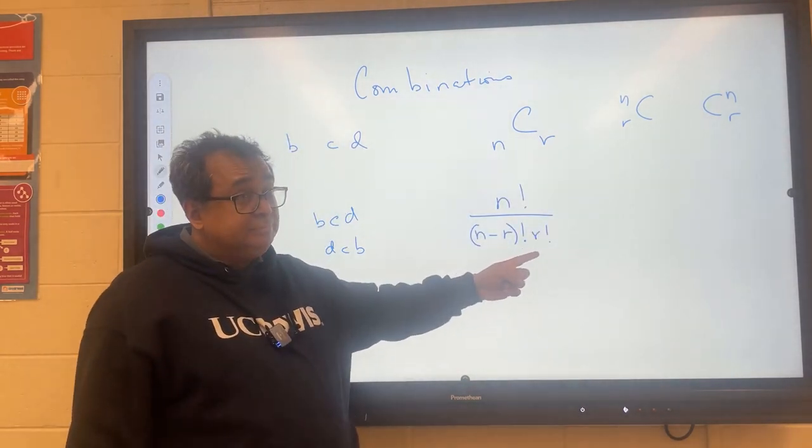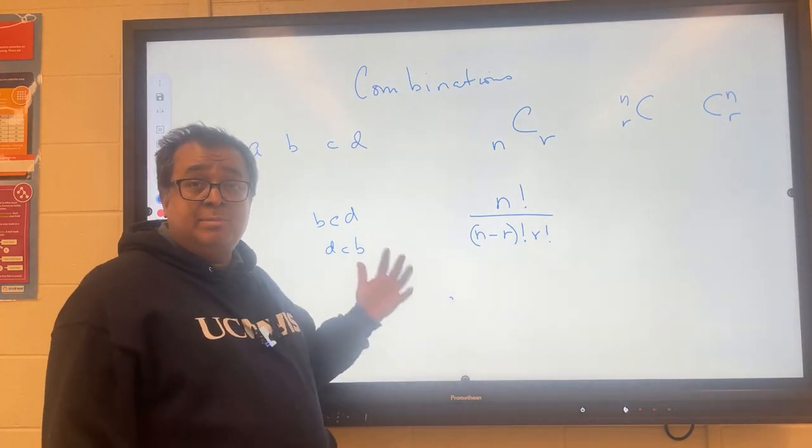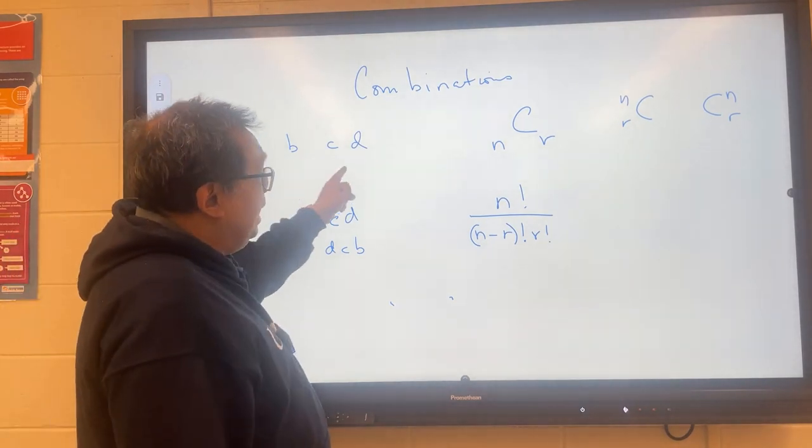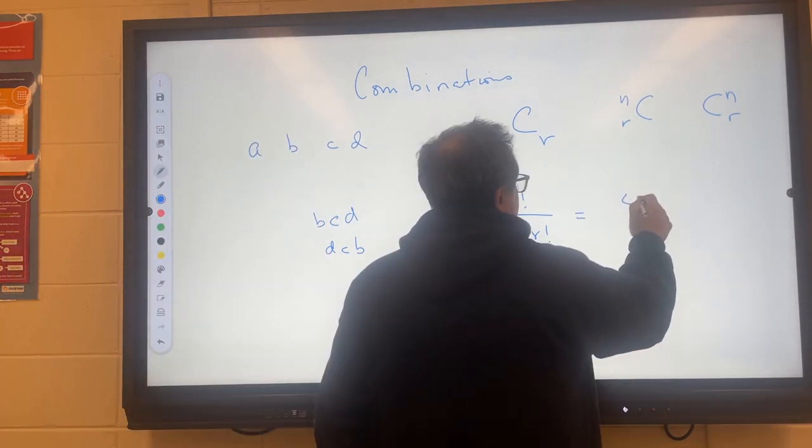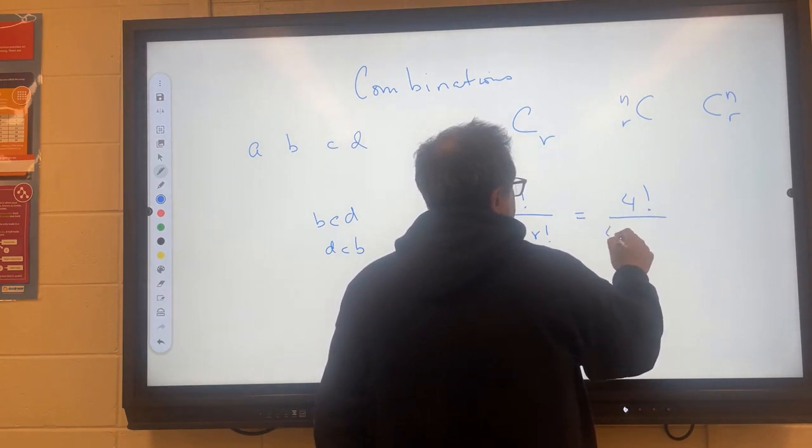So here you see we have that additional r factorial to help us remove the duplicates because order doesn't matter here. So in our example here, if we have n being 4 for the number of players that are possible on the team and we're going to pick 3, it will be like this.